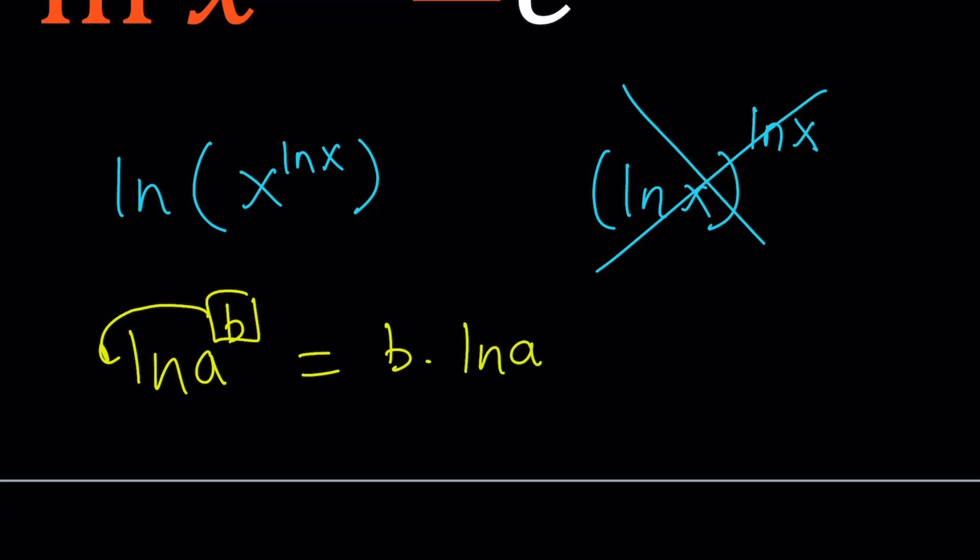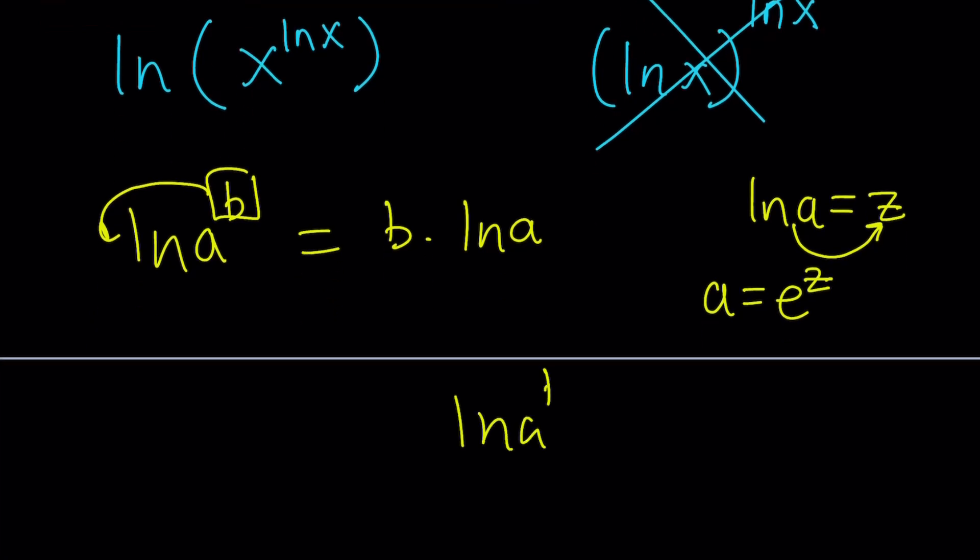Now, why does this work? Use the definition of logs and you're going to see why this works. You can basically set ln a equal to z. And then from here, by definition, you get a equals e to the power z. And then ln a to the power b is ln e to the z to the b, which is ln e to the power zb. You can kind of proceed with that. So that shouldn't be too hard to prove with that idea, but let's get back to the problem.